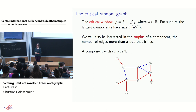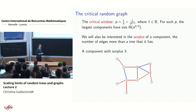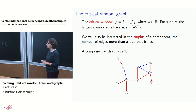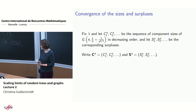I'm interested in two things: the sizes of the components and their numbers of surplus edges. The surplus of a component is the number of edges more than a spanning tree — edges you can remove and still remain connected. For example, a component with surplus 3 has three edges (shown in blue) that can be removed while keeping connectivity. These surplus edges are not uniquely defined.